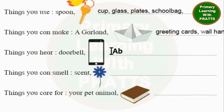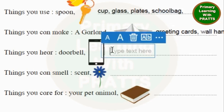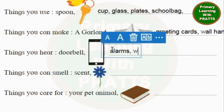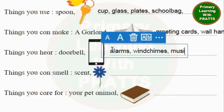Things you hear: Doorbell, Phone. We can write Alarms — alarms are of different kinds, you have smoke alarms and clock alarms. Wind chimes — they are very beautiful to hear. And you hear Music. You can add any more things you want.